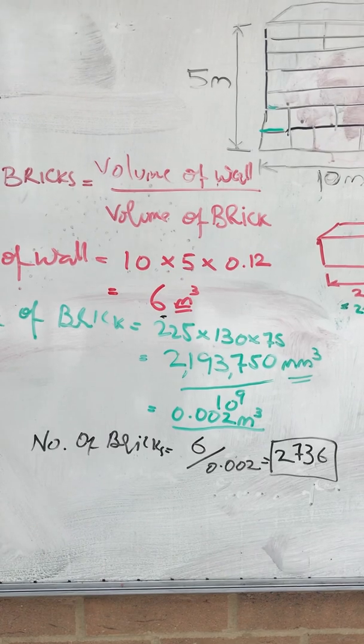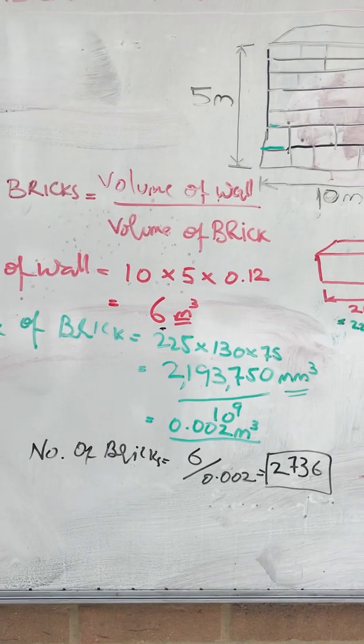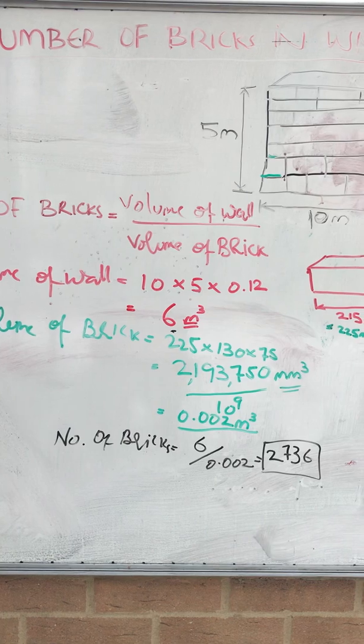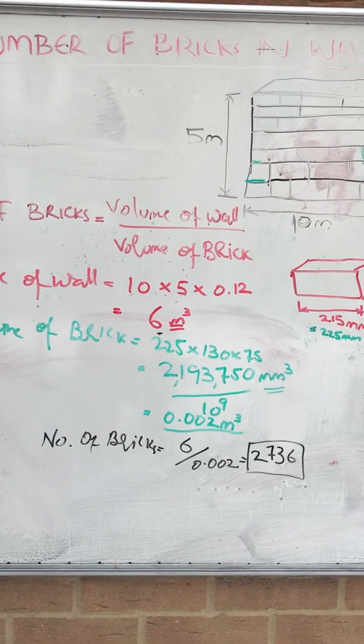You can change that to 0.002 cubic meter, and the number of bricks is equal to 6 divided by 0.002, equal to 2,736.